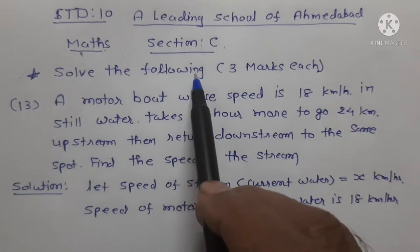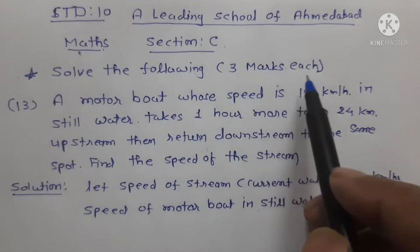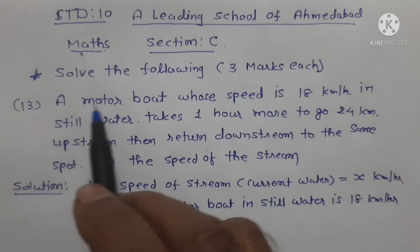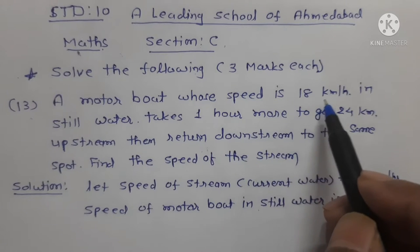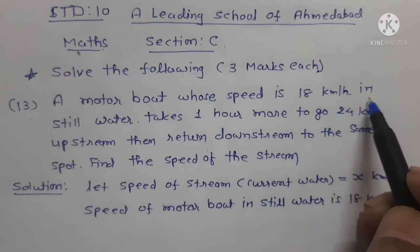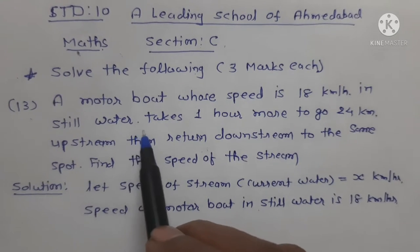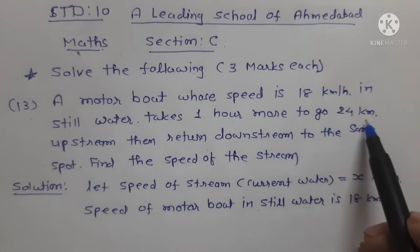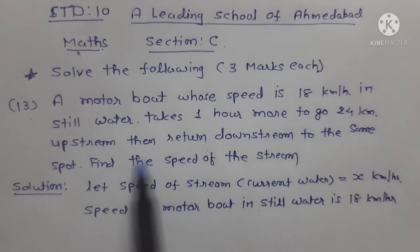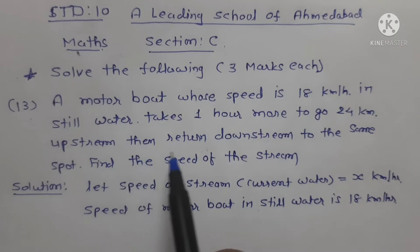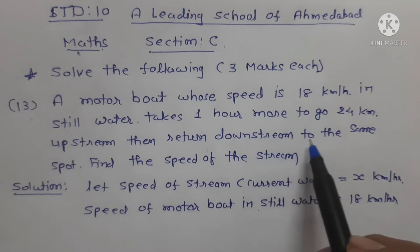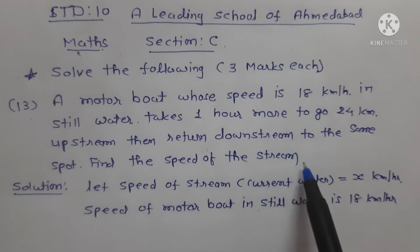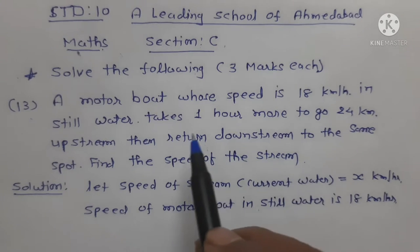Solve the following, three marks each. Question number 13: A motor boat whose speed is 18 km per hour in still water takes one hour more to go 24 km upstream than to return downstream to the same spot. Find the speed of the stream. Here there are two parts: downstream and upstream.